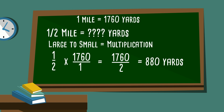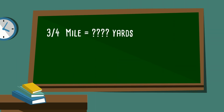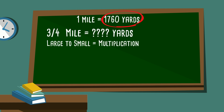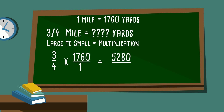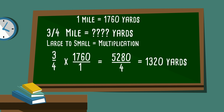Let's look at one more example that is similar. 3 fourths of a mile equals how many yards. Again, mile is larger than yards, so we're going to multiply. We multiply 3 fourths times 1,760, placing it over 1. When we multiply straight across, 3 times 1,760 equals 5,280, and 4 times 1 equals 4. So now we can reduce the improper fraction 5,280 over 4 by dividing 5,280 by 4, and that equals 1,320. So 3 fourths of a mile equals 1,320 yards.